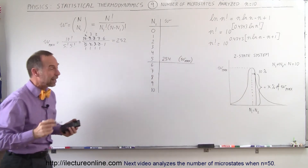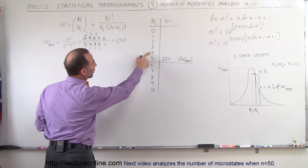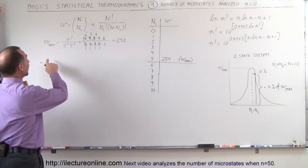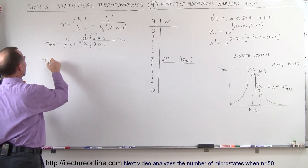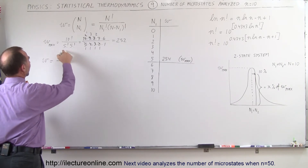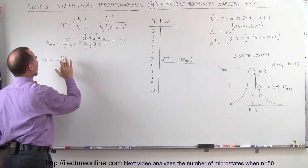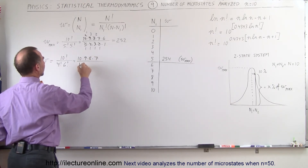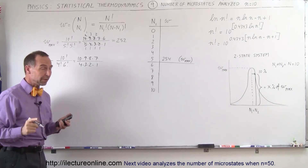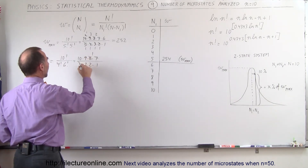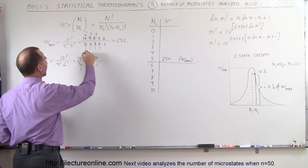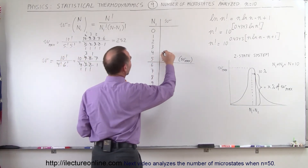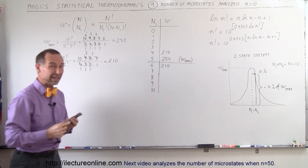Now let's see what it is for n1 equals 4. The number for n1 equals 4 will be the same as n1 equals 6 by perfect symmetry. So the number of microstates equals 10 factorial divided by 4 factorial times 6 factorial. That's 10 times 9 times 8 times 7, divided by 4 times 3 times 2 times 1. Simplifying: 8 divided by 4 times 2 goes to 1, 9 divided by 3 equals 3. So that's 30 times 7, which equals 210. There are 210 microstates here and 210 microstates there.